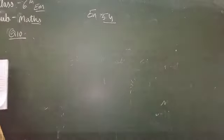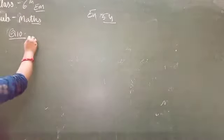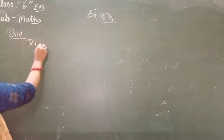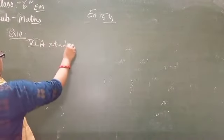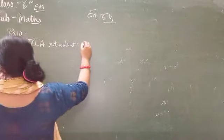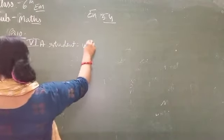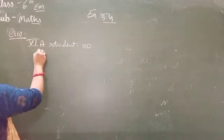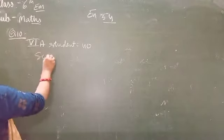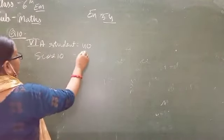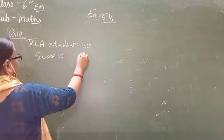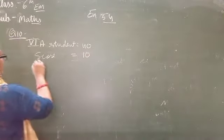Which section has more students scoring above 90 marks in mathematics? In 6A, there are 40 students, and 10 students scored more than 90.